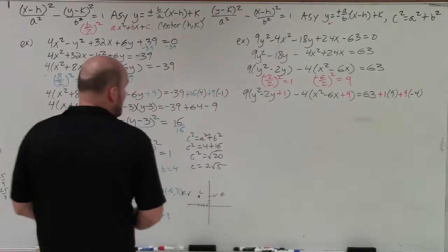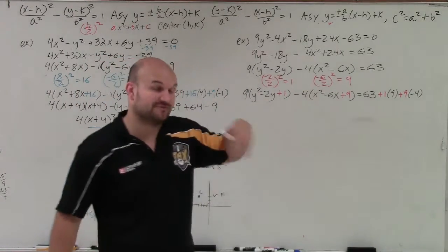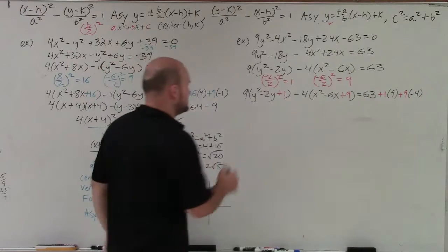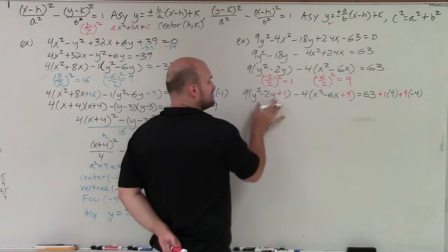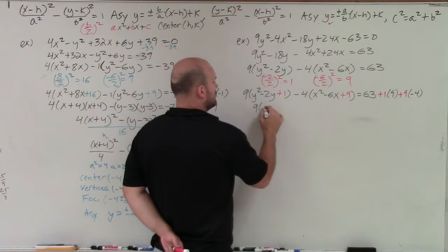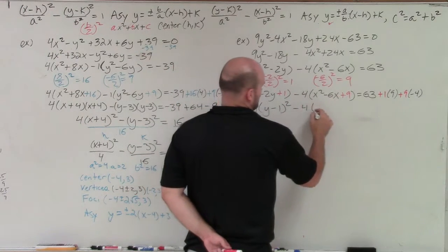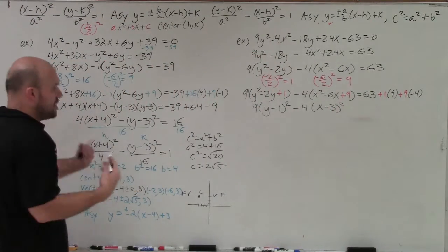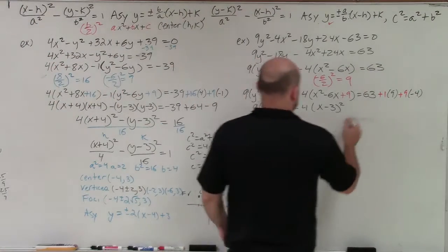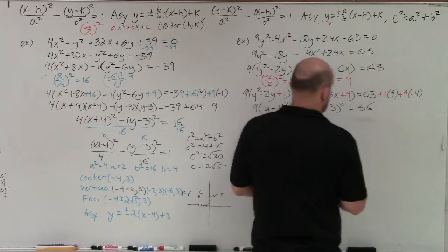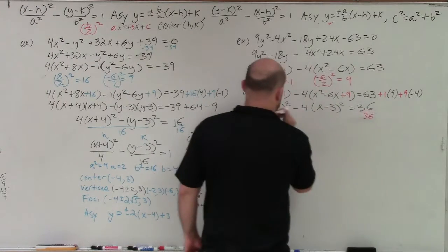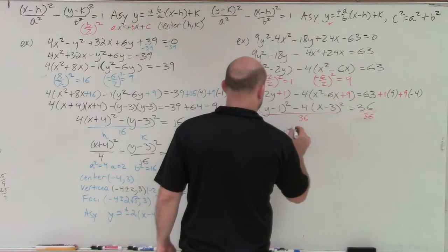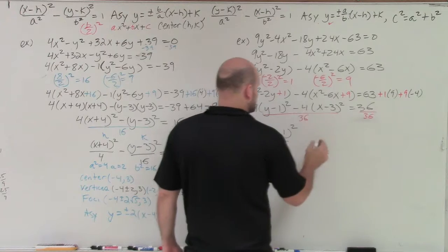Now we've created our perfect square trinomials, so we can factor them down to binomial squares. With practice, you'll get used to knowing they always give you binomial squares. This equals 36, and I just need to set it equal to 1, so I divide by 36 on both sides. 9 over 36 is 1 fourth, and 4 over 36 is 1 ninth.